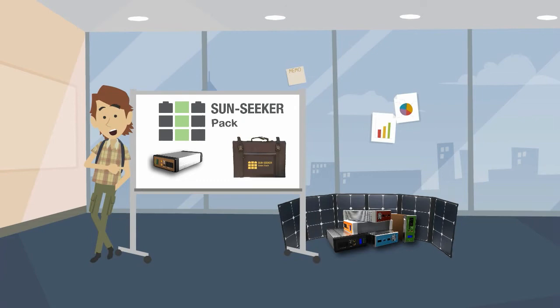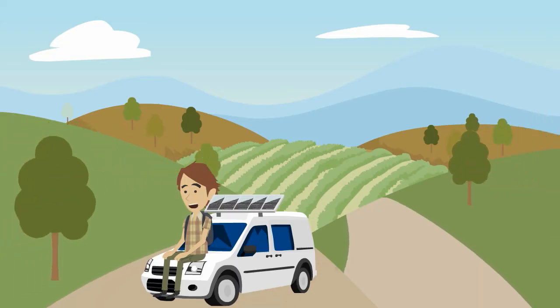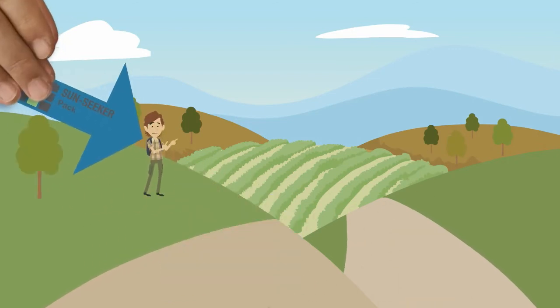The answer is the Sunseeker Pack. The Sunseeker Pack contains all the components of a full-size RV power system. But thanks to the wonders of some crazy new technology,